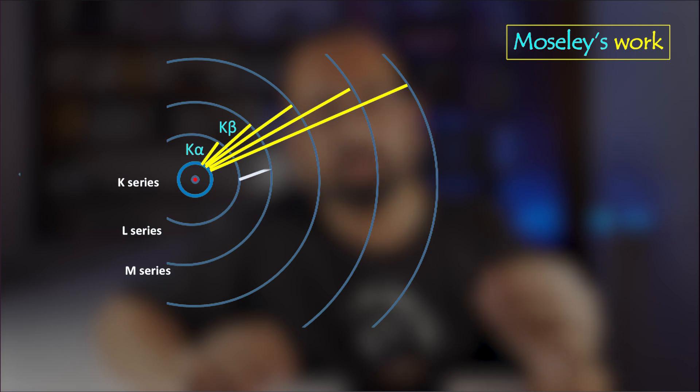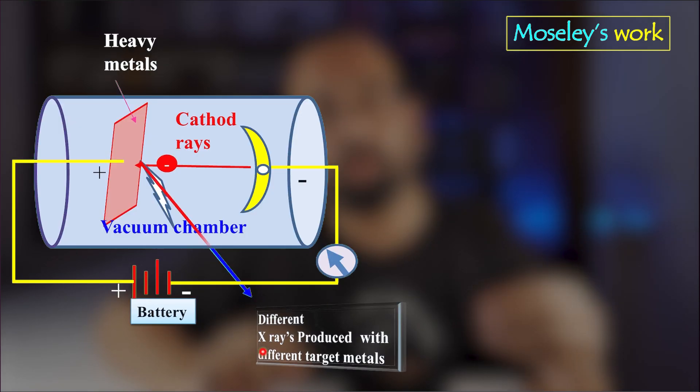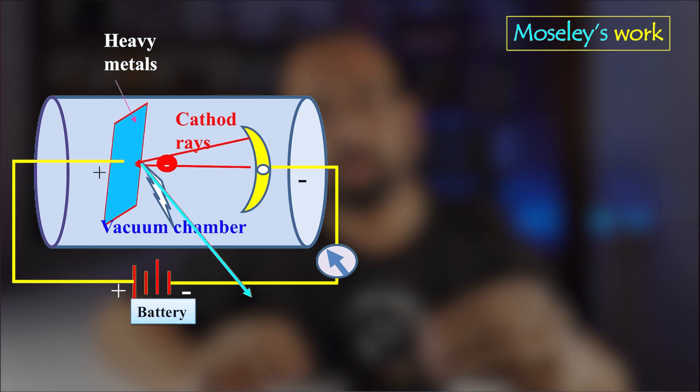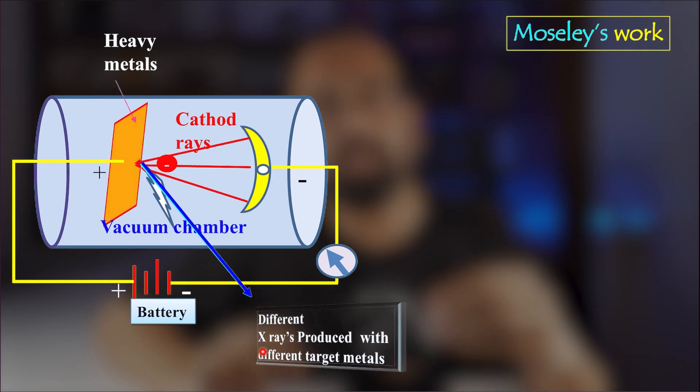In the same way, when the electrons from the M shell moves to fill the vacancy in the L shell, then the L alpha, similarly L beta series of spectral lines are produced. It is important to note that every material has a characteristic X-ray line spectrum. When the target material is changed in the X-ray tube, the energy, wavelength, and the frequency of the X-rays produced also changed, resulting in a different line spectrum. These X-rays are known as characteristic of that target material.